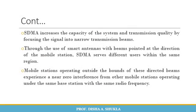SDMA increases the capacity of the system and transmission quality by focusing signals into a narrow transmission beam through the use of smart antennas, with beams pointed at the direction of the mobile station. Mobile stations operating outside the bounds of these direct beams experience near-zero interference from other mobile stations operating under the same base station.